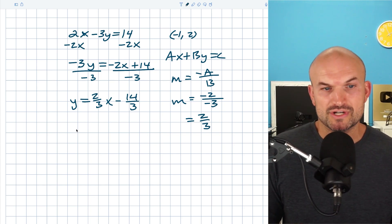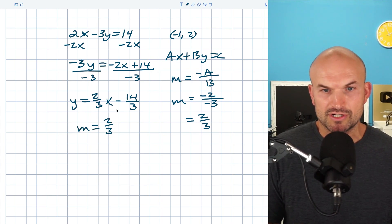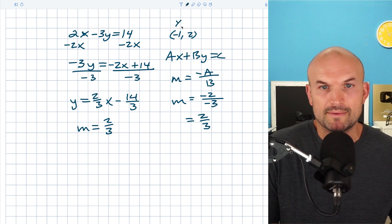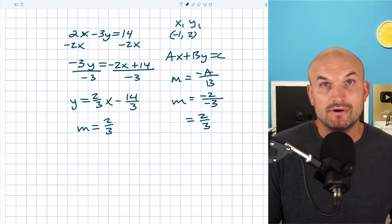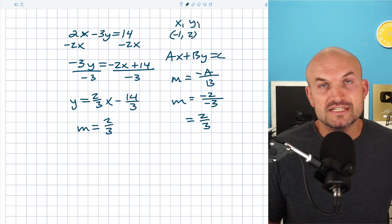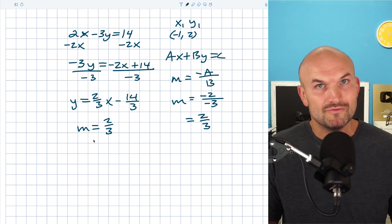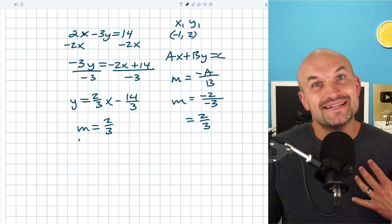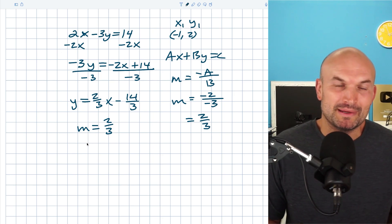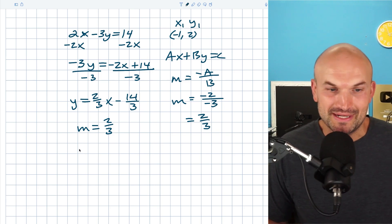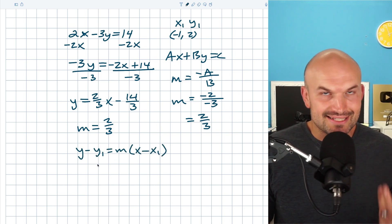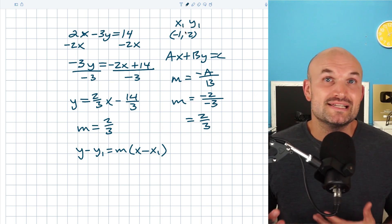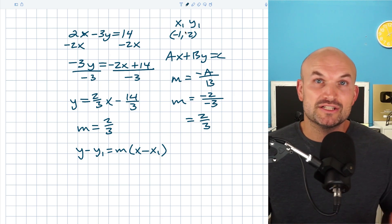I'm going to use point-slope form since I have both a slope and a coordinate point. I'll label the coordinate as x₁, y₁ because it's a specific point. Point-slope form makes sense when you have a point and a slope. Many students forget the formula, so let's write it out. Once we have our slope and x₁, y₁, we just simplify to get slope-intercept form.